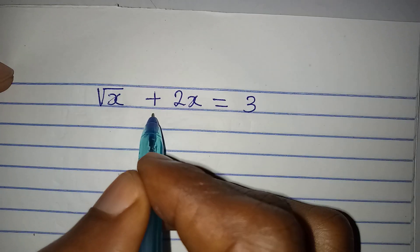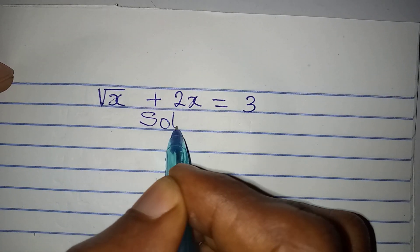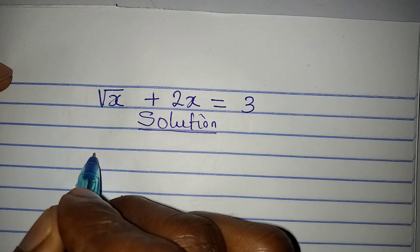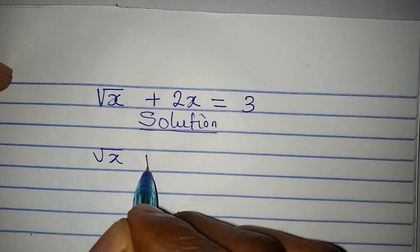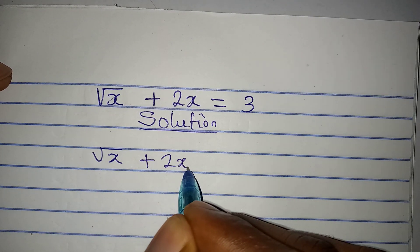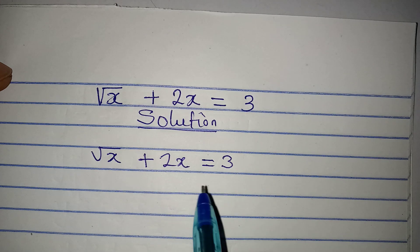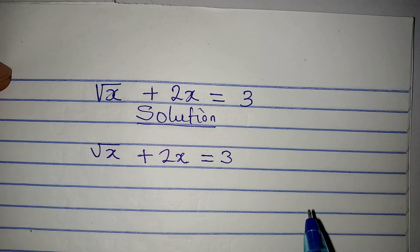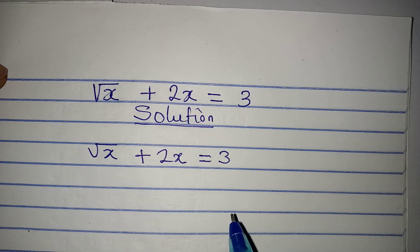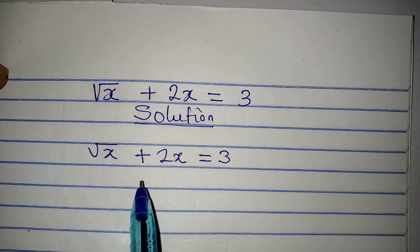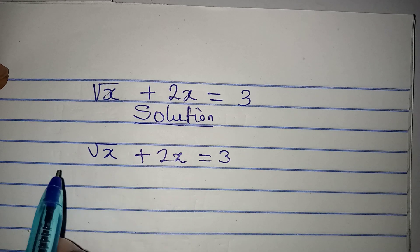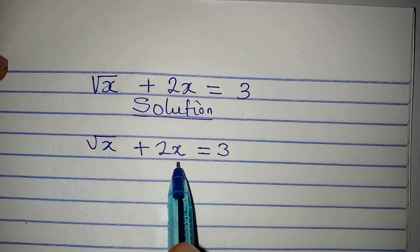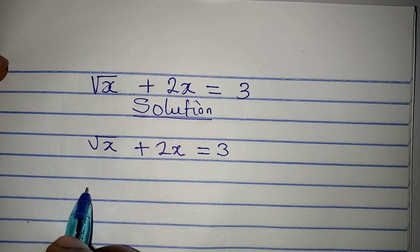Hello everyone, let's solve this equation very quickly. We have square root of x plus 2x equals 3. Welcome to Fucco Mathematics, where we solve math problems in detail. Now what we are going to do is to take 2x to the other side.